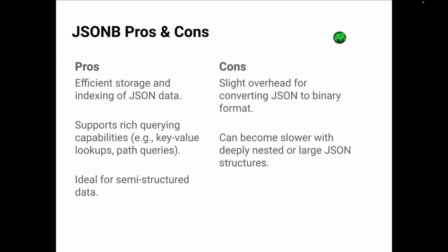Let's look at the pros of using JSONB. JSONB offers efficient storage and indexing of JSON data, meaning you can perform key-value lookups or path queries with ease. It also supports powerful querying capabilities, allowing you to filter data based on specific fields or attributes within your JSON structure. If your data structure is not always fixed — like product attributes that vary — JSONB is perfect for storing semi-structured or dynamic data.